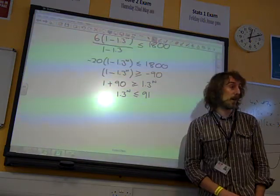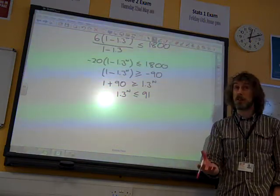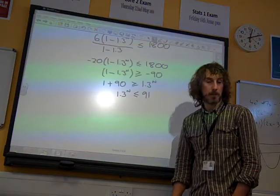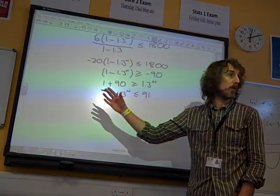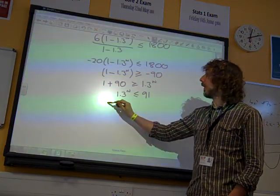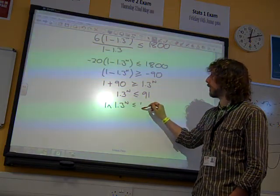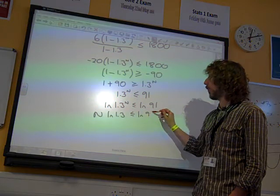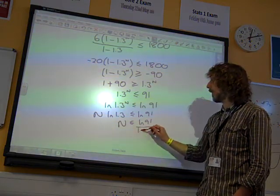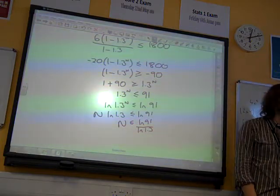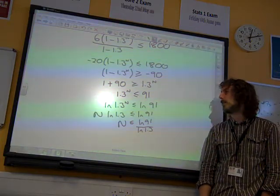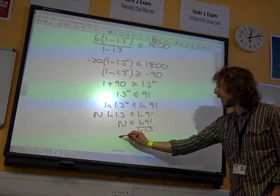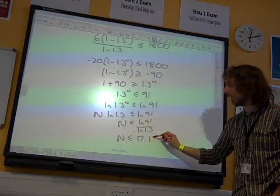Having got that far, we now need to solve it to find the value of n. And actually, loads of you did this bit really well. It said use logarithms. So we're going to put the natural log in front of both sides, or log base 10, whichever one you want to use. So natural log of 1.3 to the n is less than or equal to the natural log of 91. n ln 1.3 is less than or equal to ln 91. So n is less than or equal to ln 91 over ln 1.3. Whatever you did to get there, loads of you did that right. And you came up with n being less than or equal to 17.193.